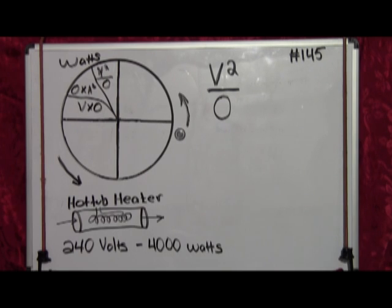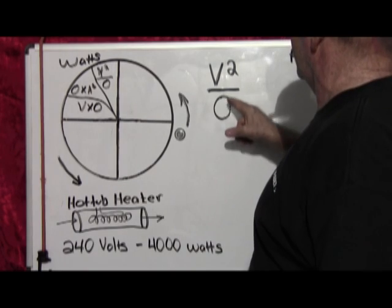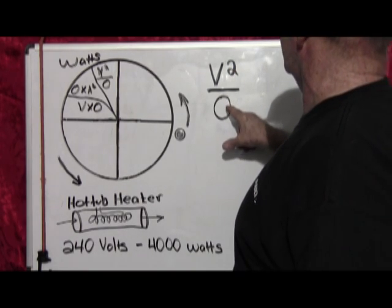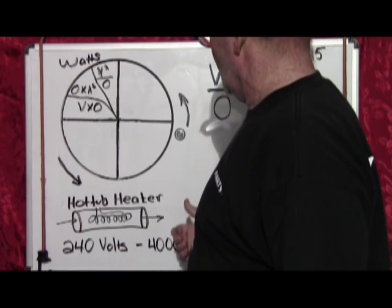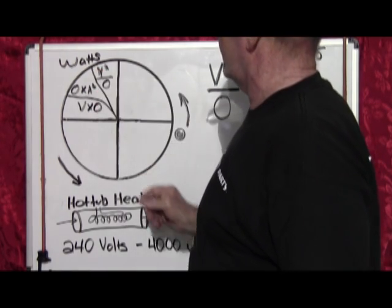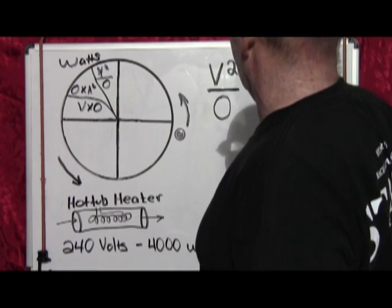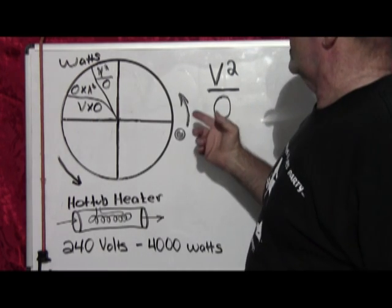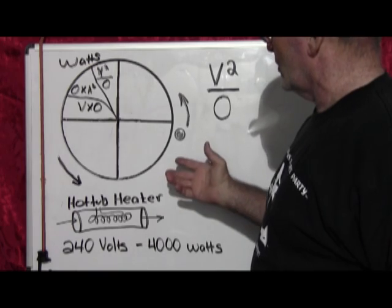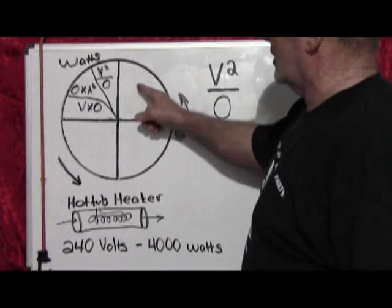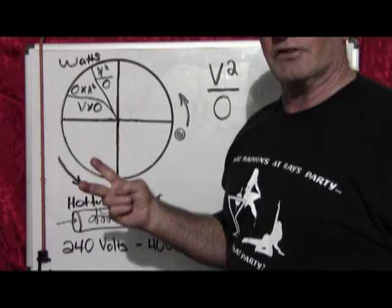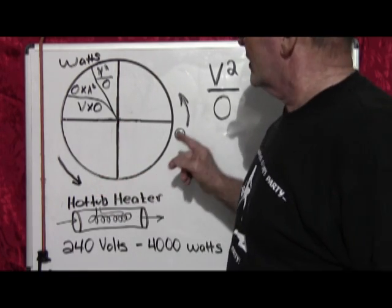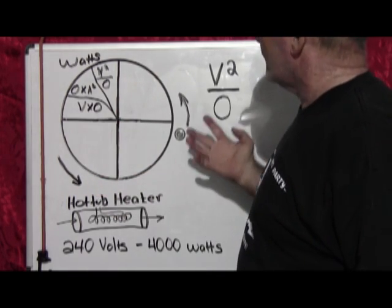The new heaters are 4,000 watts at 240 volts. Now you see here, volts squared over ohms is going to give you watts. That's fine. We know what the voltage is, it's 240 volts, but how do we get ohms? Well, we borrow from another portion of the pie chart.